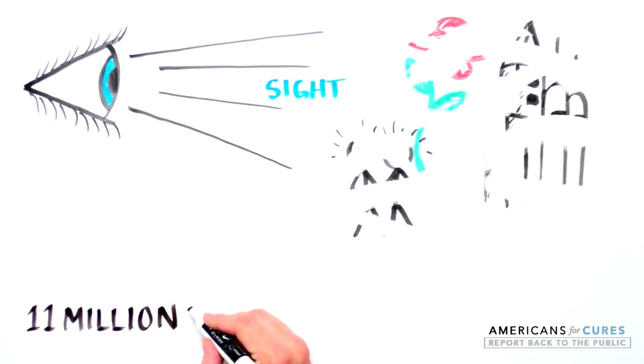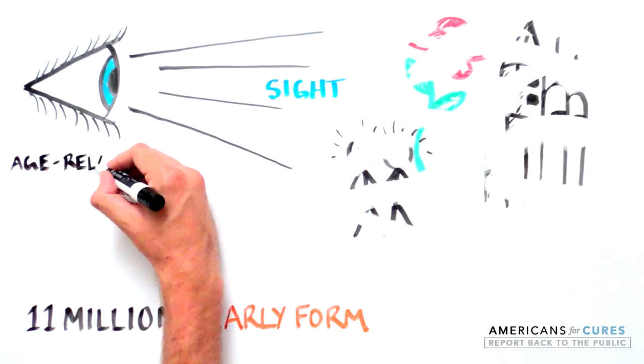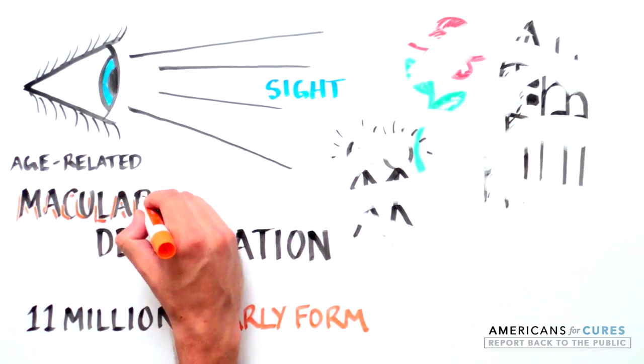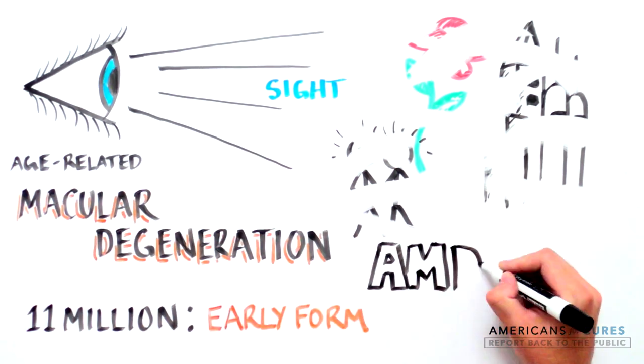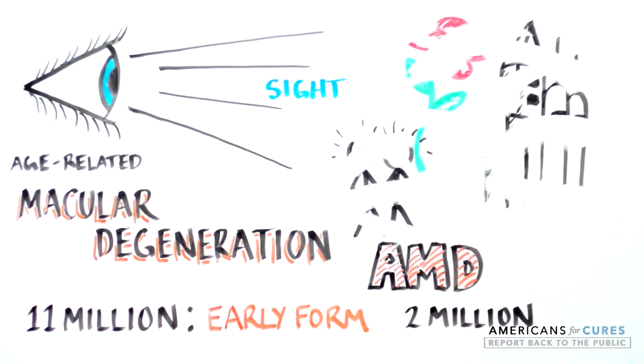Unfortunately, there are 11 million Americans with the early form of a disease known as age-related macular degeneration, AMD, and already 2 million have lost vision because they have the devastating late form of this disease.